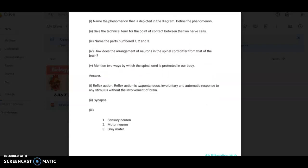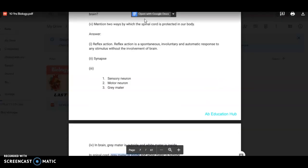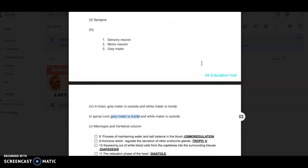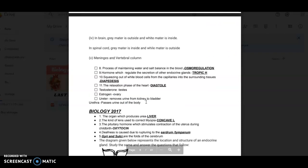Then how does the arrangement of neurons in the spinal cord differ from that of the brain? So here in brain, gray matter is outside and white matter is inside, while in spinal cord it is opposite. Like gray matter is inside and white matter is outside. The last question, mention two ways by which the spinal cord is protected in our body. It is by meninges and vertebral column. Then process of maintaining water and salt balance in the blood: osmoregulation.